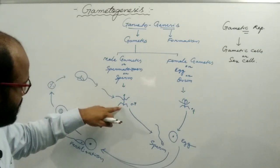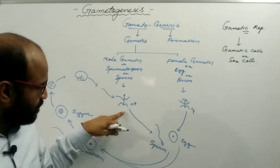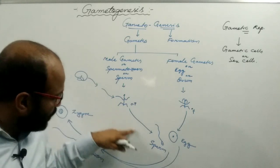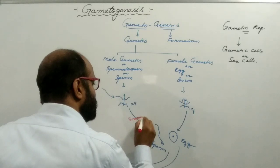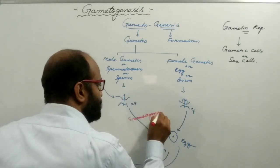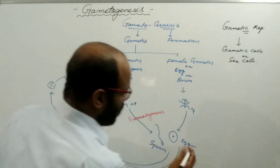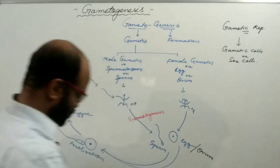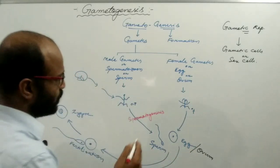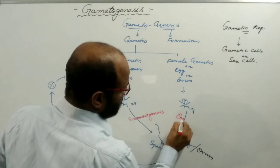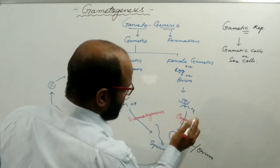The process by which male gametes are produced is known as spermatogenesis, because the male individual produces sperm. Likewise, the female individual produces egg or ovum, and the process by which egg or ovum are produced is known as oogenesis.